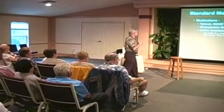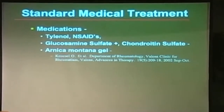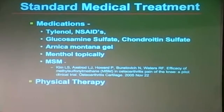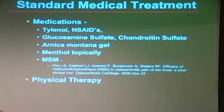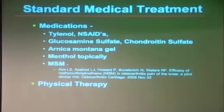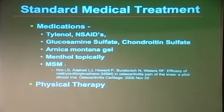Arnica montana gel is an herb that's been studied in a randomized controlled double-blind trial. They gave one group a placebo cream and the other the active cream and found it did help the joint feel better, decreased pain, and improved function. Menthol used topically may be helpful. MSM has also been demonstrated to be of some help in a pilot clinical trial. We don't have the highest level of evidence, but it may be beneficial.